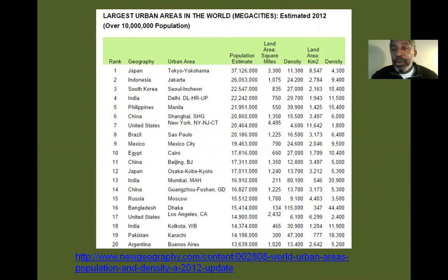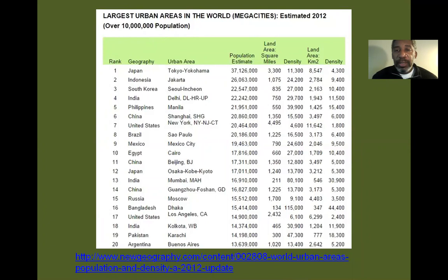This chart is from 2012 — it's a little dated, but you can see that cities are growing and they're all very large. Population density is extremely high in some cities, up to 24,000 people per square kilometer in some cases. In Bangladesh — Dhaka, Bangladesh — there are 115,000 people per square kilometer. Compare that with New York City, which has approximately 4,600 people per square kilometer.